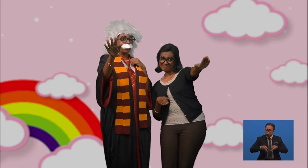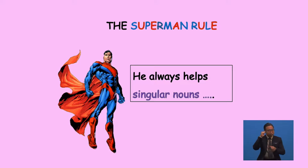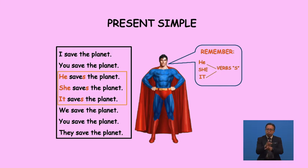That was fun, wasn't it? Let me share a simple way to remember. Do you know Superman? Superman is a great helper in simple present tense. Superman always helps someone who is alone doing an action. So for singular nouns like he, she, and it, Superman comes for a rescue. Look at the examples: 'He saves the planet', 'She saves the planet', 'It saves the planet'. The S added is saved by Superman — he has come for a rescue!